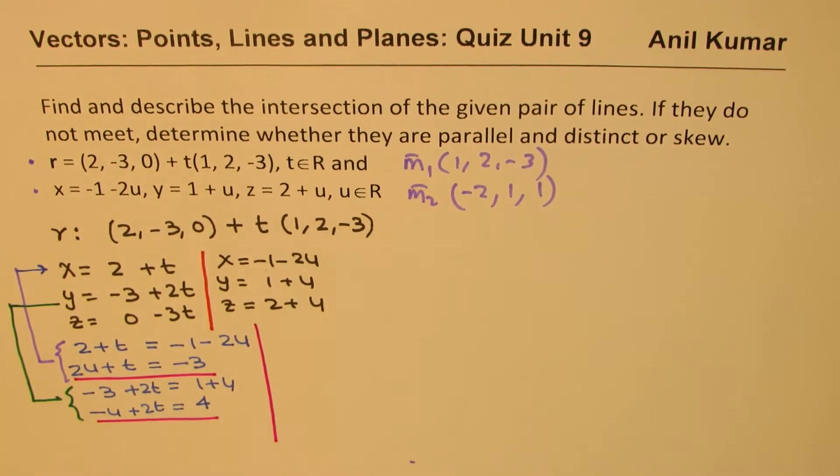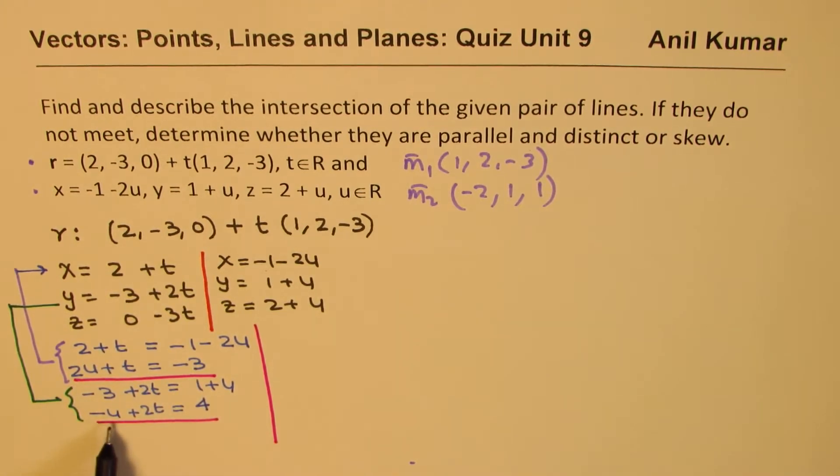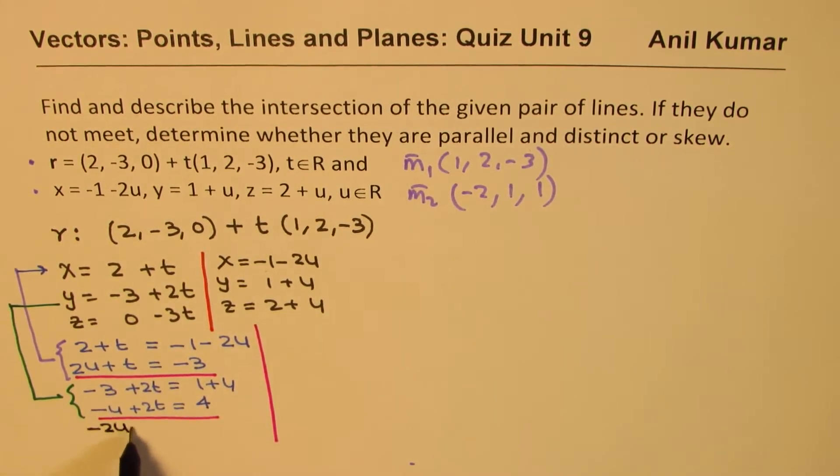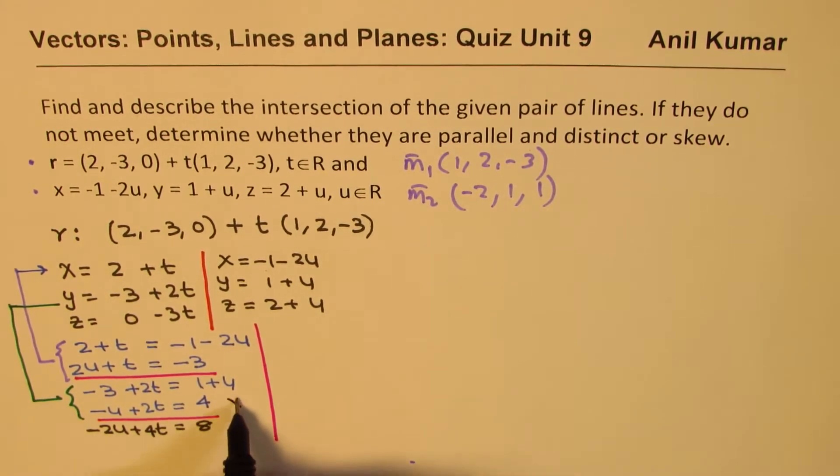We could do elimination. First, let's say we want to eliminate U from here. So let me multiply this equation by 2, so I could write this as -2U + 4t = 8, right? So I did times 2, this particular equation.